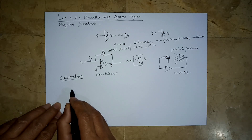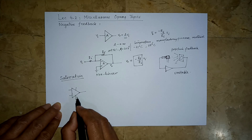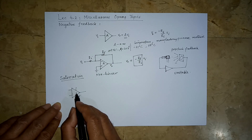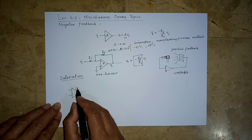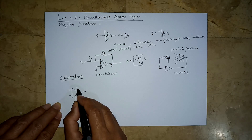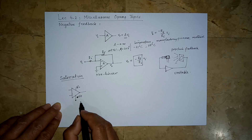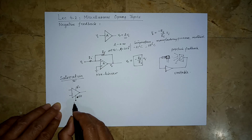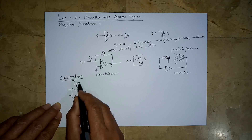An opamp has two inputs and one output, along with other pins for supplying two voltages. We must power up the opamp for it to operate, so there is a positive voltage V+ and a negative voltage V−, usually from 5 to 24 volts. For example, suppose we have an opamp with +12V connected at V+ and −12V at V−.